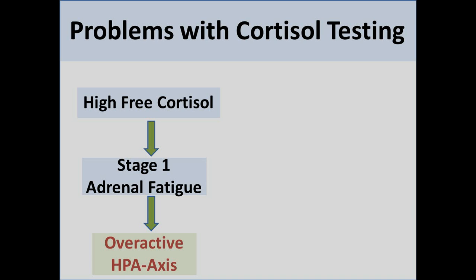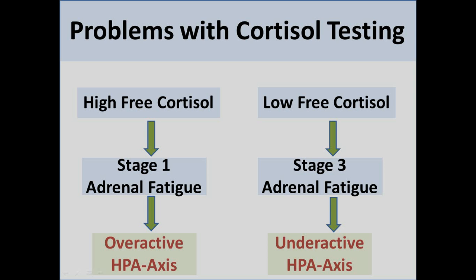That's really critical because there is other information available in urine testing that you can't get from saliva that can really clear up the picture. When looking at cortisol, we're typically asking whether the HPA axis is overactive or underactive. High free cortisol suggests an overactive HPA axis — what some call stage 1 adrenal fatigue. With low cortisol, you'd typically conclude the HPA axis is underactive, but this is where you can really be misled, because that is not always the case with low free cortisol.